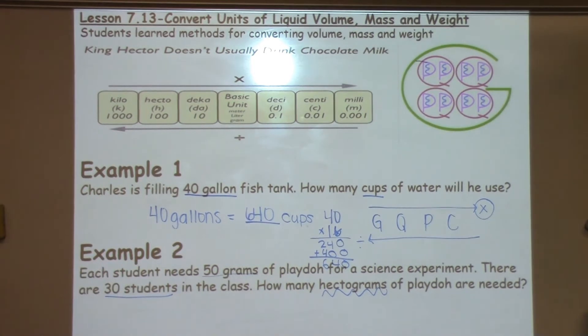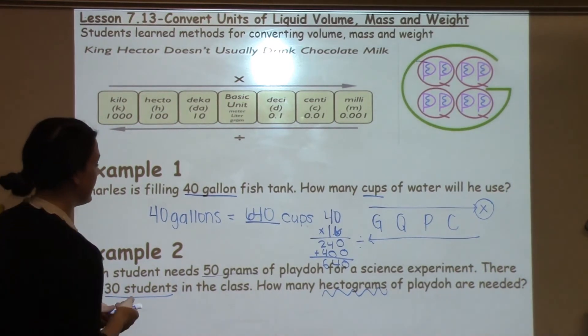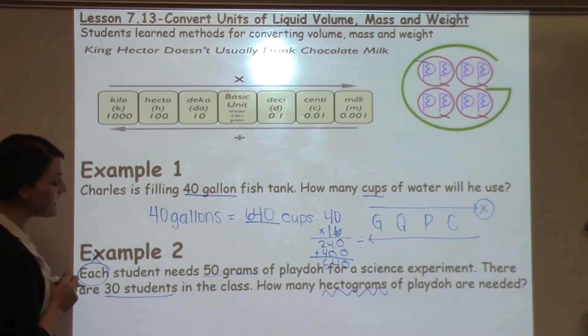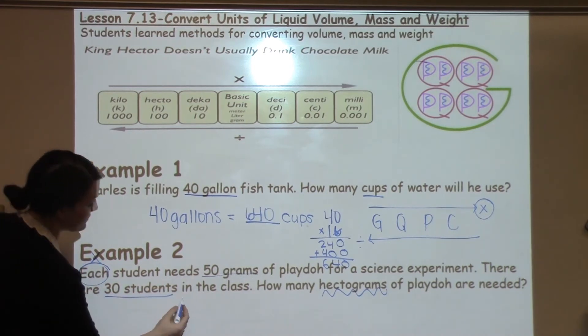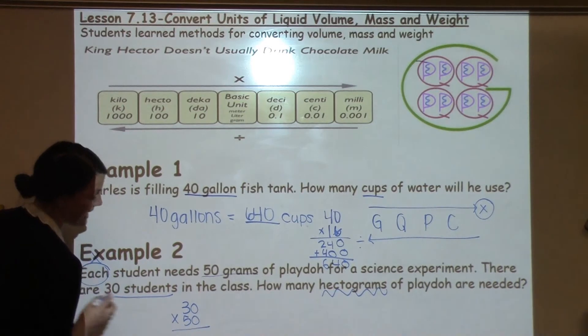We're going to just do one step at a time. First I'm going to find out how many total grams do I need. So if I have 30 students and they each—each is a really big multiplication or division word. If they each need 50, I know I'm going to be multiplying 30 times 50.